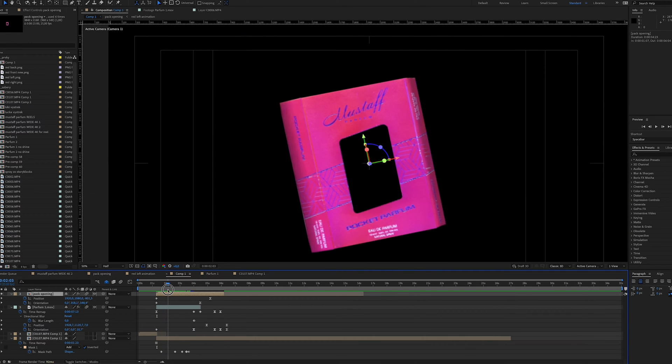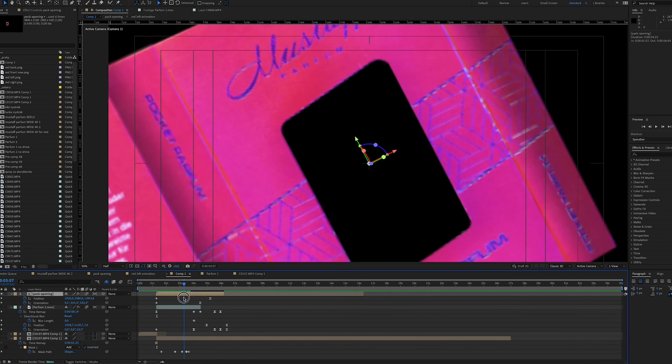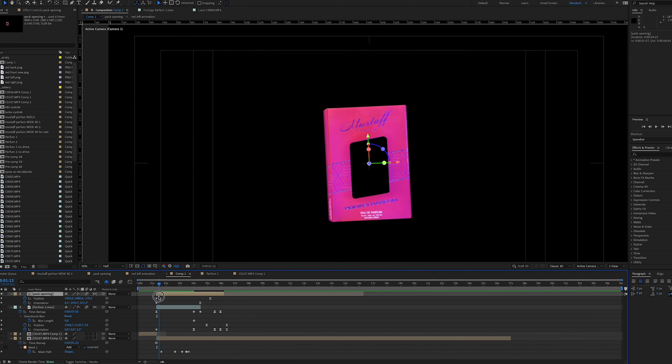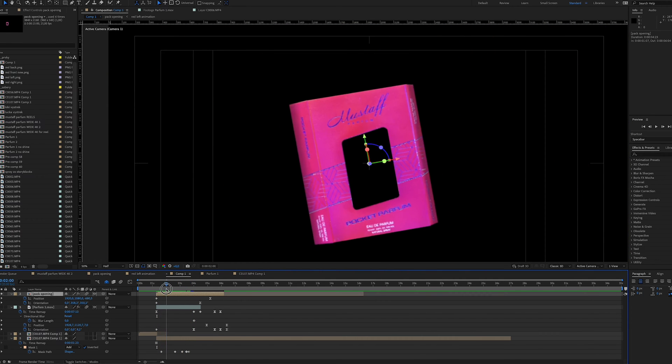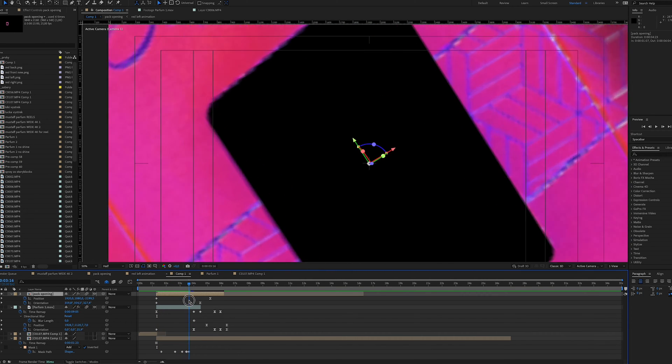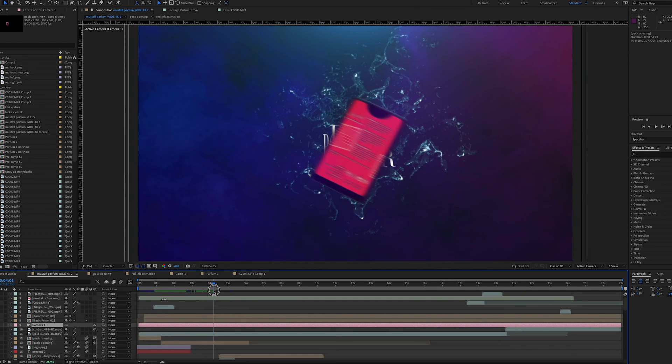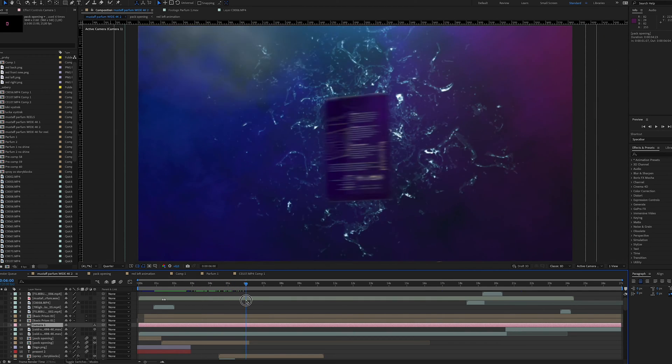So basically I just rotate the packaging on the X axis and then move it on the Z axis to create that nice illusion that the camera is flying through the packaging. When the packaging is off the screen I let the perfume rotate and bring it closer.